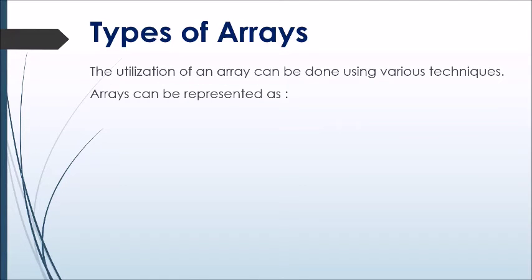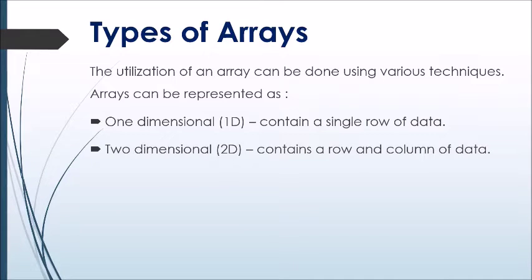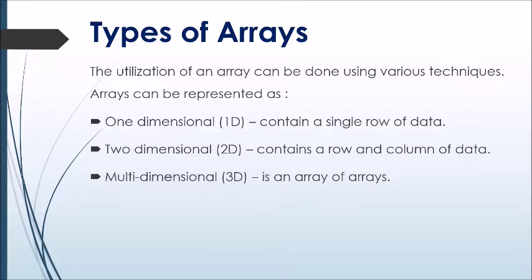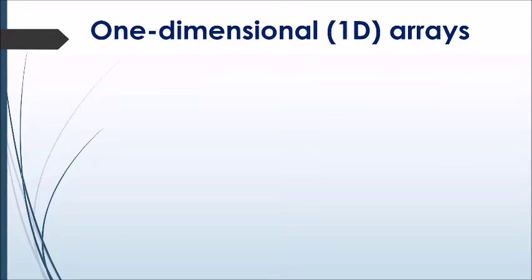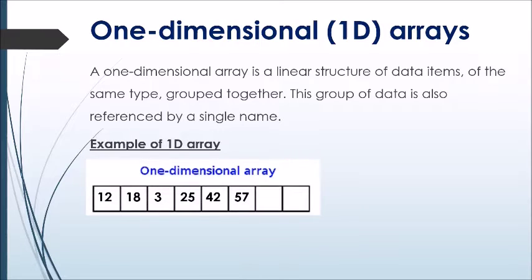Types of arrays: arrays can be represented as one-dimensional, which contains a single row of data; two-dimensional, which contains rows and columns of data; and multi-dimensional, which is classified as an array of arrays. For the purpose of simplicity, only the concepts of one-dimensional arrays will be discussed in this video. A one-dimensional array is a linear structure of data items of the same type which are grouped together.